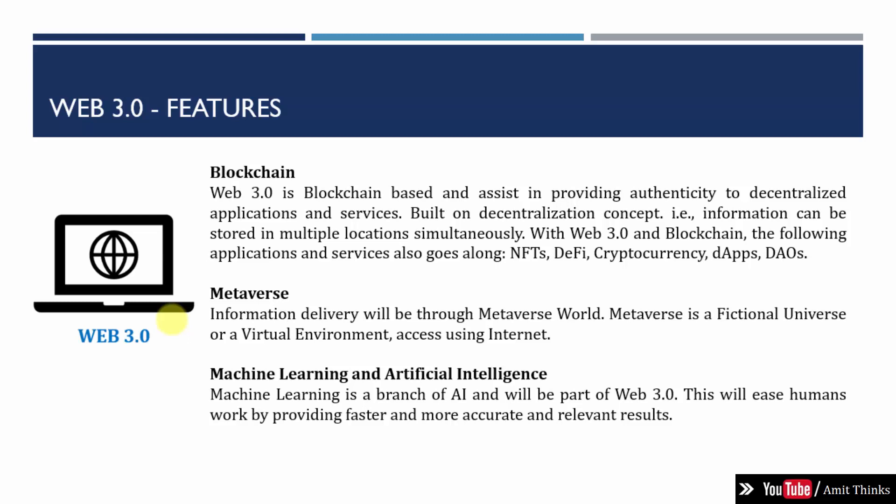Web 3.0 also includes machine learning and AI. Machine learning is a branch of artificial intelligence that allows applications to become more accurate at predicting outcomes. It focuses on the use of data and algorithms to imitate the way humans learn, with the purpose of enhancing accuracy of results. To provide faster and more accurate results, machine learning and AI are also part of the Web 3.0 concept. One of the most trending topics today is metaverse, which is one of the features of Web 3.0.